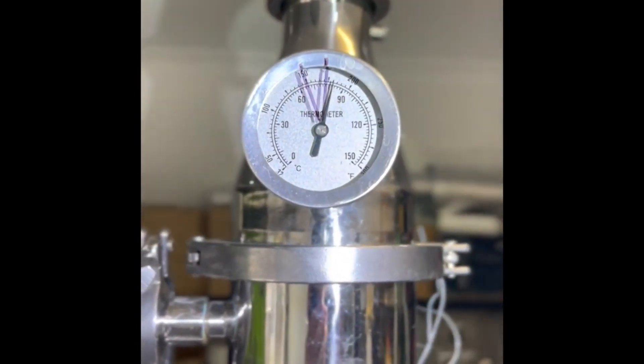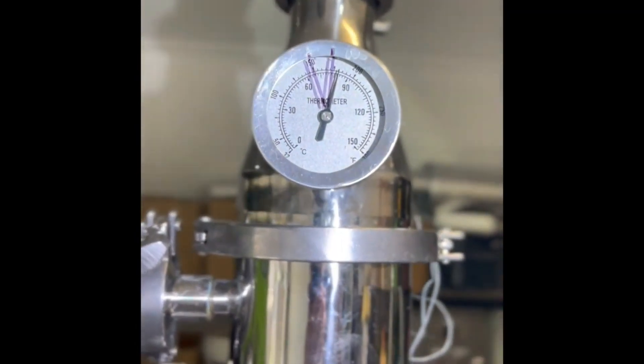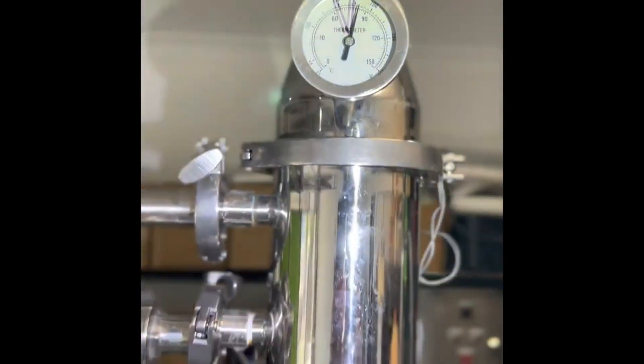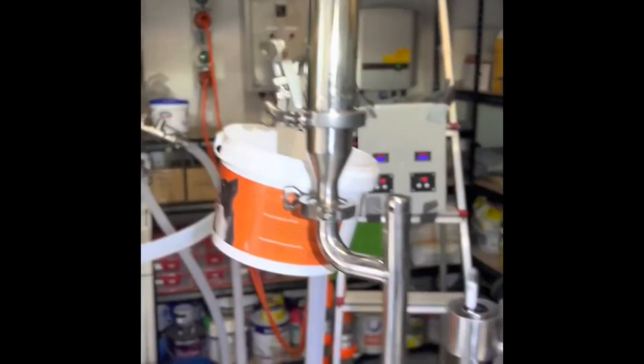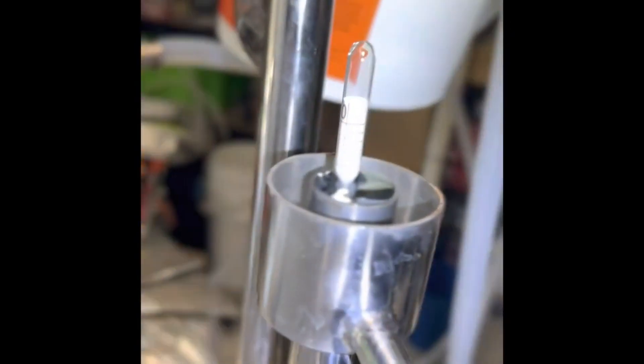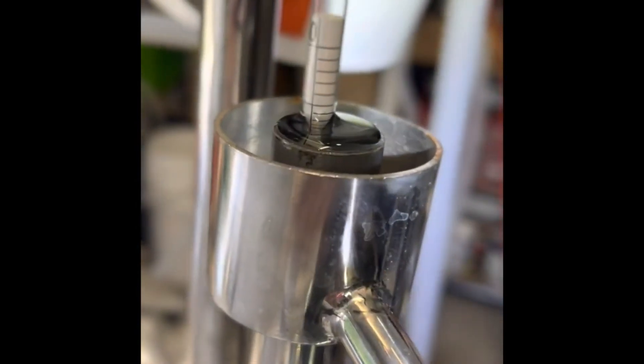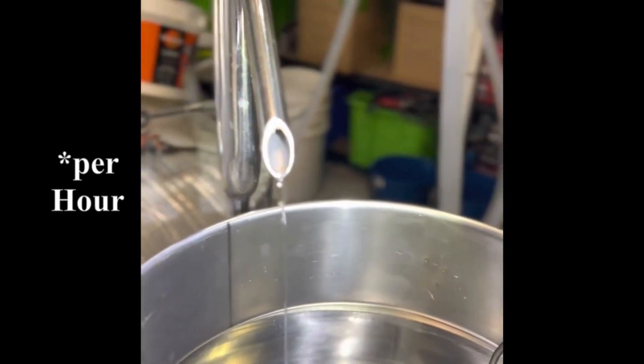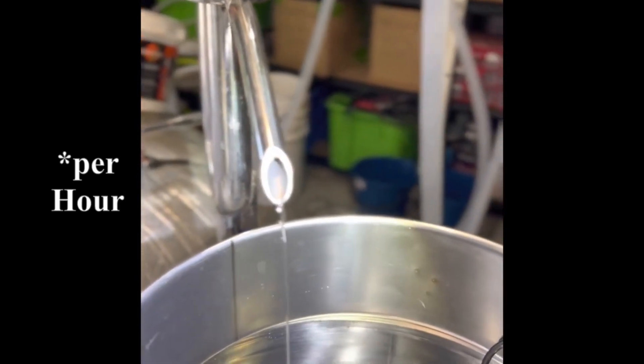82 degrees. At those settings, I'm getting alcohol out at this parrot at just on 93%, and my flow rate is coming in at just on three litres per minute.